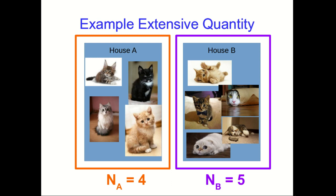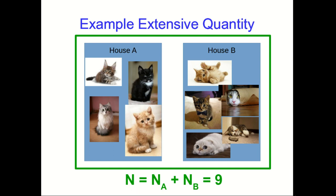We can also think about the pair of houses as a single system. And I think it's fairly obvious that the total number of cats in the two houses is just the sum of the number of cats in the separate houses.